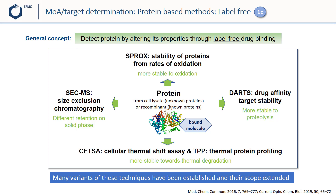Other methods listed here are more based on thermodynamic changes or stabilization of target proteins upon binding of the drug molecule. The thermal stabilization is exploited in Cellular Thermal Shift Assay or CETSA and Thermal Protein Profiling or TPP. The method called Drug Affinity Responsive Target Stability or DARTS relies on ligand-based protection of the target protein against proteolysis. In the case of SPROX — stability of proteins from rates of oxidation — the ligand-mediated stabilization of a protein against denaturation and oxidation is used. This is just a high-level summary, and other variants have been established near scope extended.